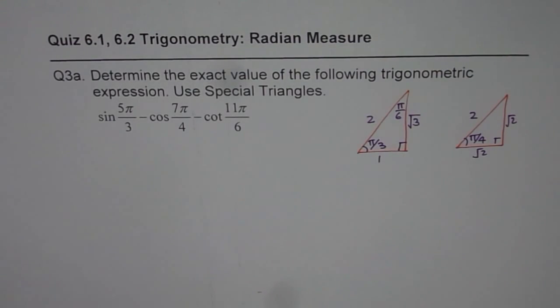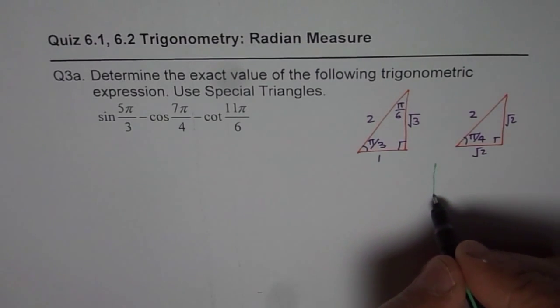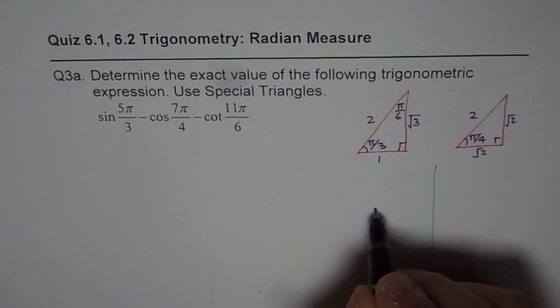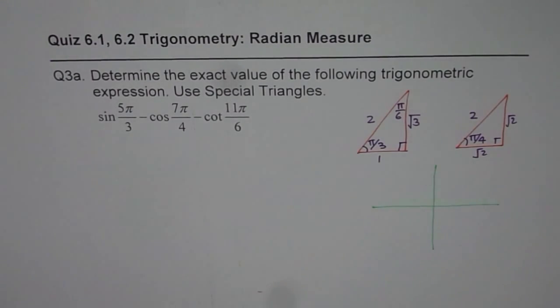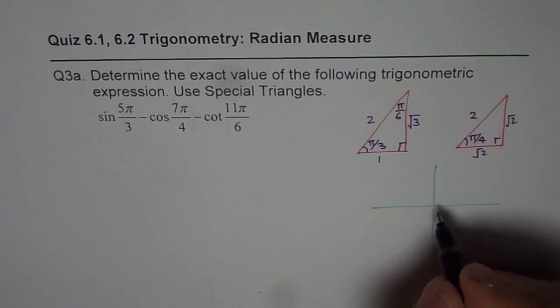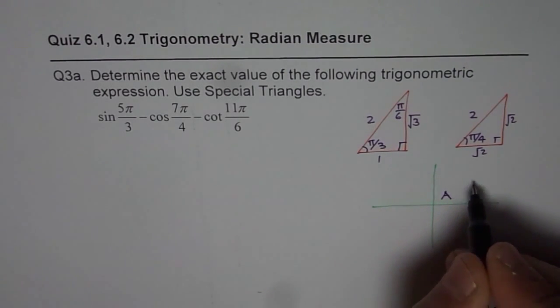Now, we also need to understand in which quadrant the terminal round will be so that we can figure out whether the trigonometric ratio is positive or negative. For that, we are going to use our rules.